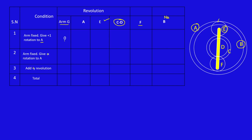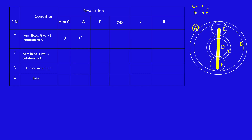Arm fixed means arm column is zero. We give plus one rotation to A, so A is plus one. A touches E — A and E are in internal contact, meaning the sign is retained. So whatever sign A has, E will have the same sign: E is also plus.